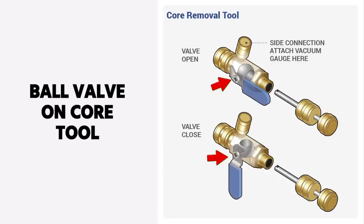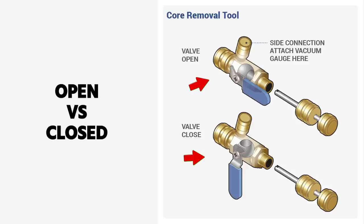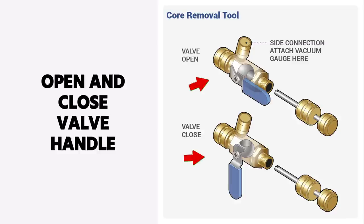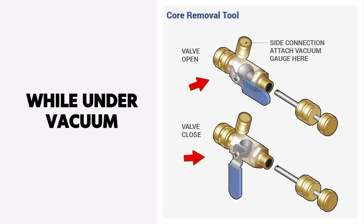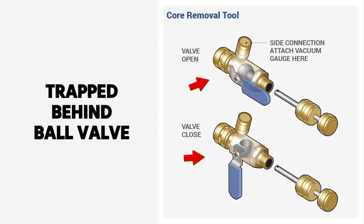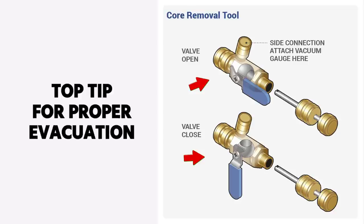You have to understand the ball valve on your core tool, make sure to understand open versus closed. Another thing that's a good idea is when you are under vacuum with any core tool, exercise the valve. Open and close the valve handle while you are under vacuum, and that will allow any air bubbles that are trapped behind the ball valve to get evacuated as well. That's just a good top tip for proper evacuation.